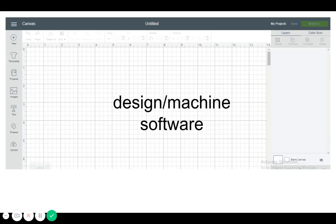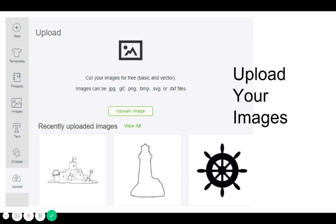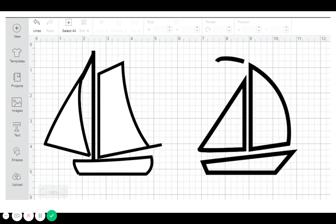Get to your design machine software, upload your images and get them on the layout template. Pay attention to where you're putting them and their size or dimensions. You can usually change them in here.